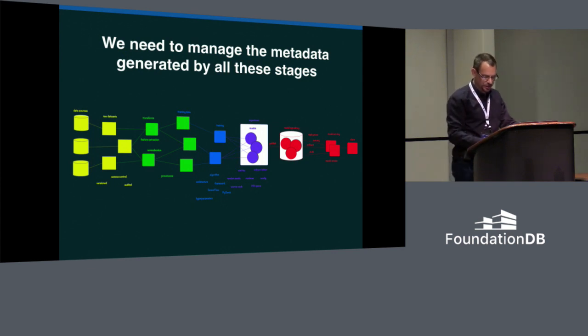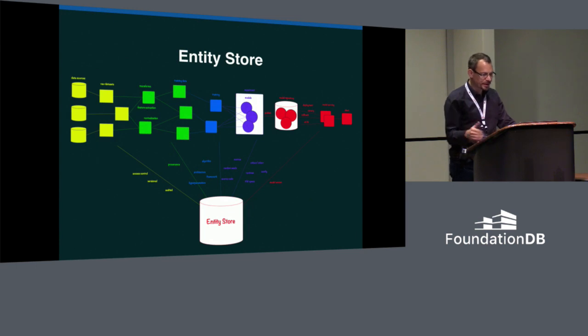This is what EntityStore does. So EntityStore is a FoundationDB layer that implements a data model for versioned entities with fine-grained authorization and lineage. It's implemented as a Python library exposing its own API above the FoundationDB Python bindings.